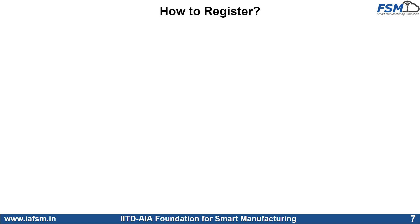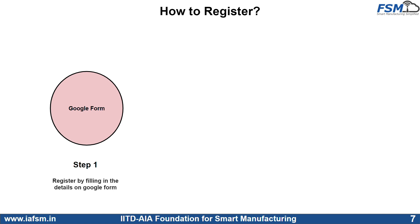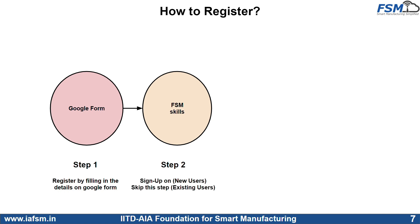Let's go through the steps on how to register for the course. The first step is to fill in the details in the Google Form — the link is available in the description. For step two, go to www.fsmskills.in and sign up for a new account. If you already have an account with FSM Skills, you can skip this step.